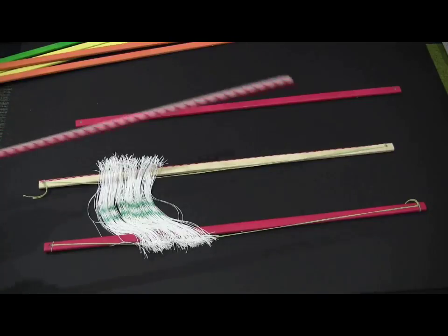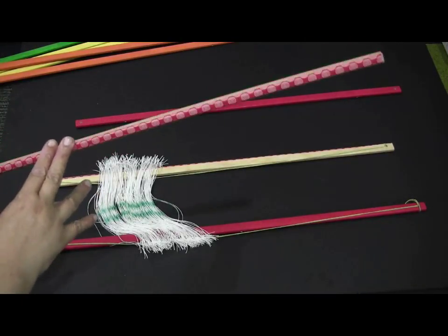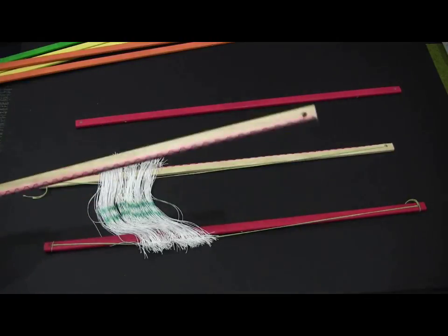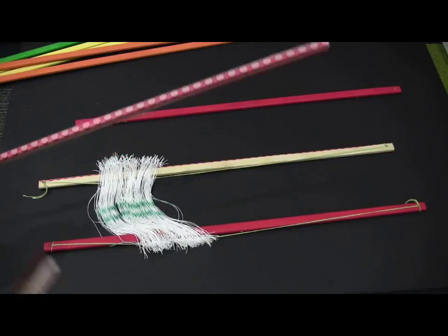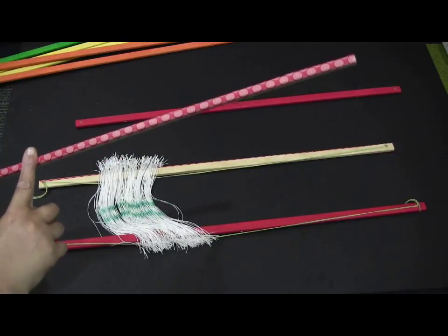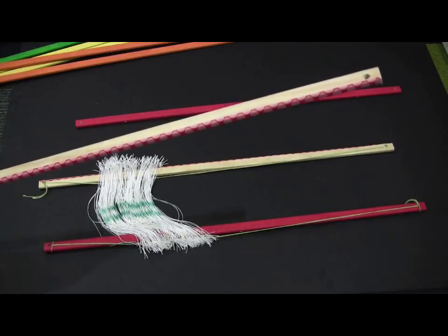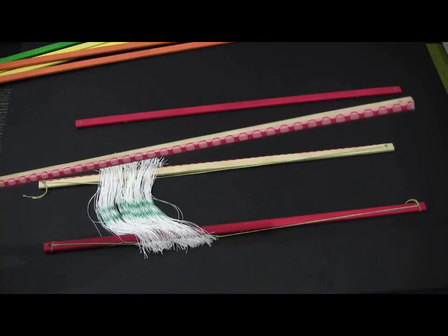Oh and by the way just so you know the reason that there is this washi tape here is a previous attempt to color the heddle bars without painting it and for whatever reason my washi tape was not staying on very well even after spray varnishing. The washi tape was a good idea but didn't work.